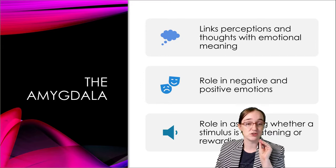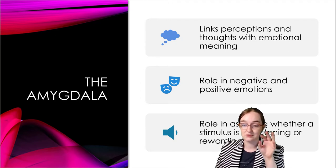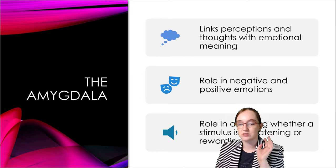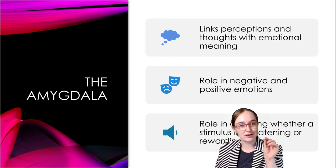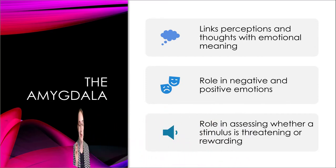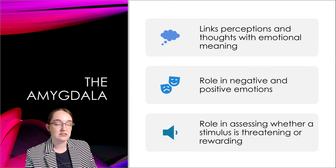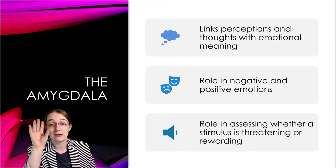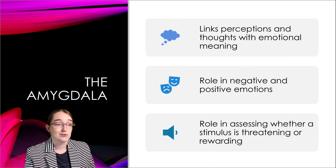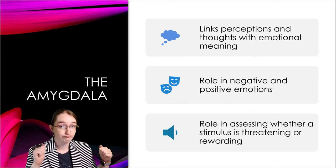The amygdala lights up for shy people when they're shown pictures of strangers. People with anxiety disorders tend to have the amygdala highly active — it definitely has a role in anxiety. It also has a role in positive emotions: social attraction and sexual responses. There's an evaluation role in assessing whether a stimulus is threatening or rewarding, and threat assessment and anxiety are locked hand in hand.